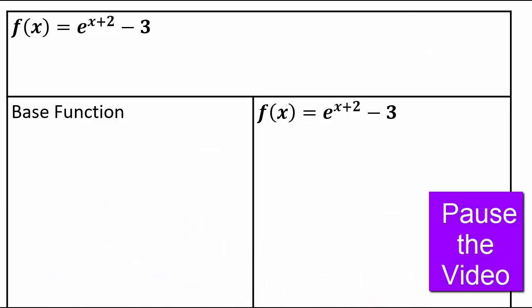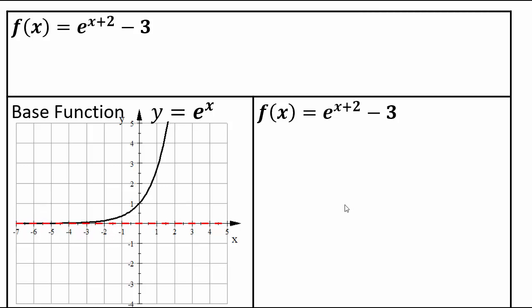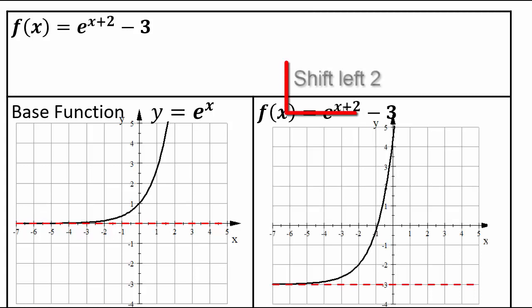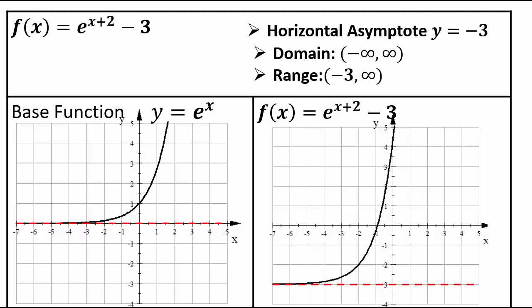For y equals e to the power (x plus 2) minus 3: the base function is y equals e to the x, with asymptote y equals 0. Hiding the plus 2 and minus 3, we apply: shift left 2 for x plus 2, then down 3 for minus 3. The horizontal asymptote becomes y equals negative 3. There is no vertical asymptote. Domain is (-∞, ∞) and range is (-3, ∞).